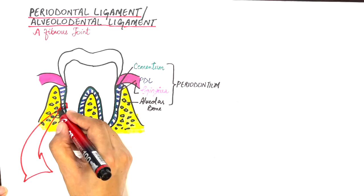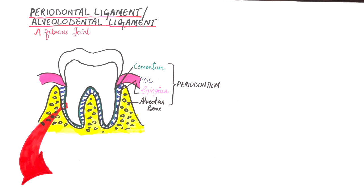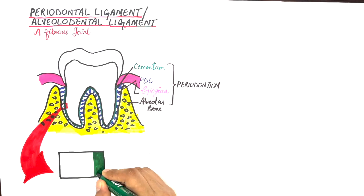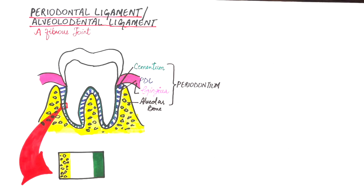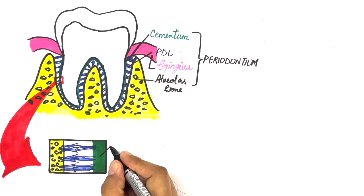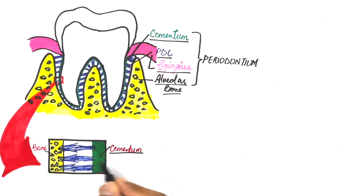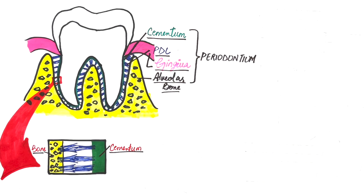The PDL fibers are anchored in the cementum on one side up to the alveolar bone on the other side. PDL takes its origin from the dental follicular cells.